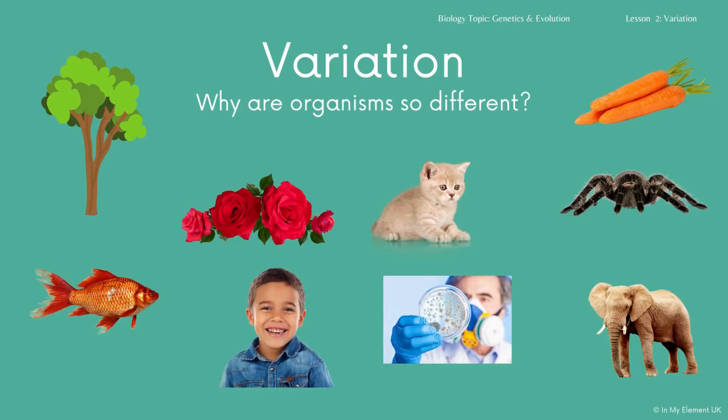So in lesson one, we had a look at inheritance and how we inherit different characteristics. In lesson two, we're going to look at the variation between organisms — the differences, why they are different and how they are different. We're going to look at obvious differences and similarities.